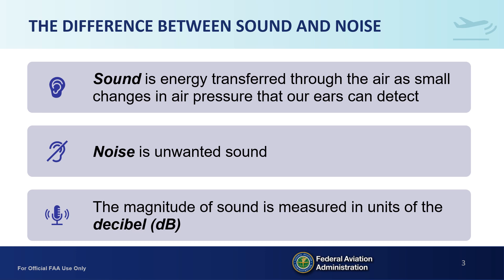We measure the magnitude of sound in a unit called the decibel, abbreviated as dB. The human ear hears sound pressures over a wide range. The logarithmic decibel unit compresses the range of human hearing to more manageable quantities.